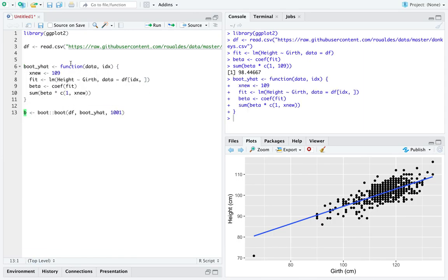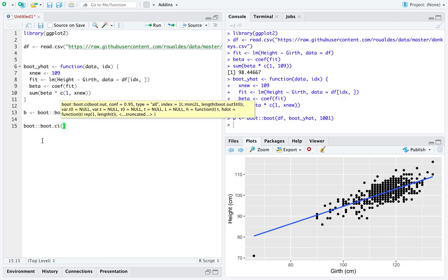Let's see, I'll load the function. We'll call the bootstrap procedure on our function boot hat. It runs really relatively quickly, which is nice. And from there, we can call the function boot.ci on the object b.